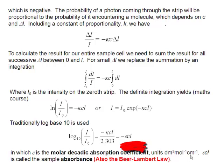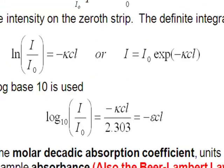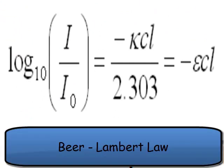That whole thing, epsilon CL, is sometimes referred to as the absorbance. And that equation there, log to the base 10 of I over I0 equals minus epsilon CL, is known as the Beer-Lambert law.